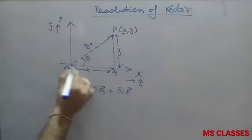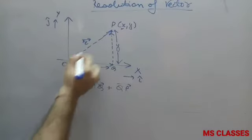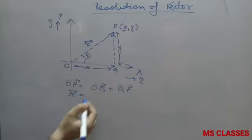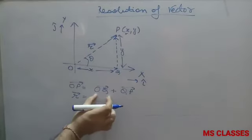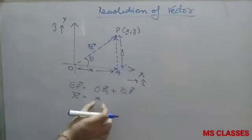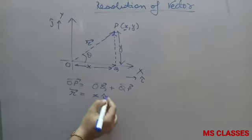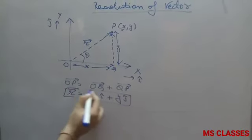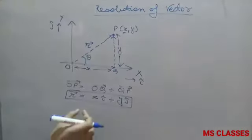OP vector is R. OQ is a vector with magnitude x and direction i-cap; similarly y j-cap. We can write the position vector in terms of x and y, called rectangular components of a vector.